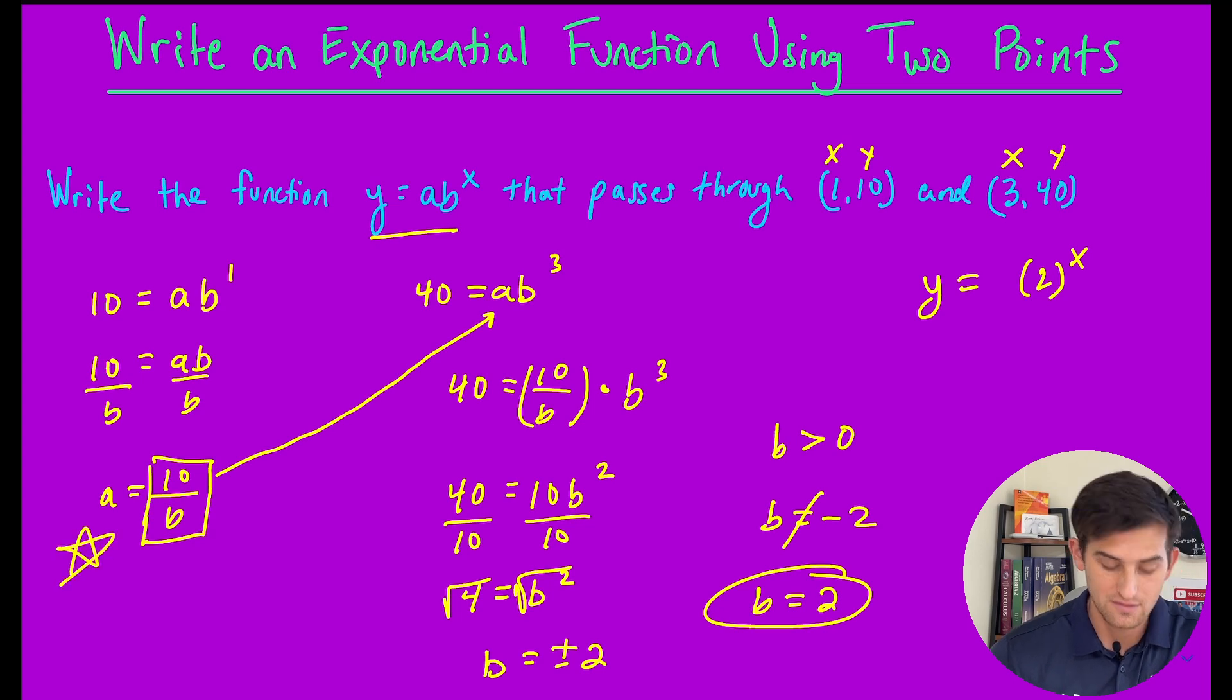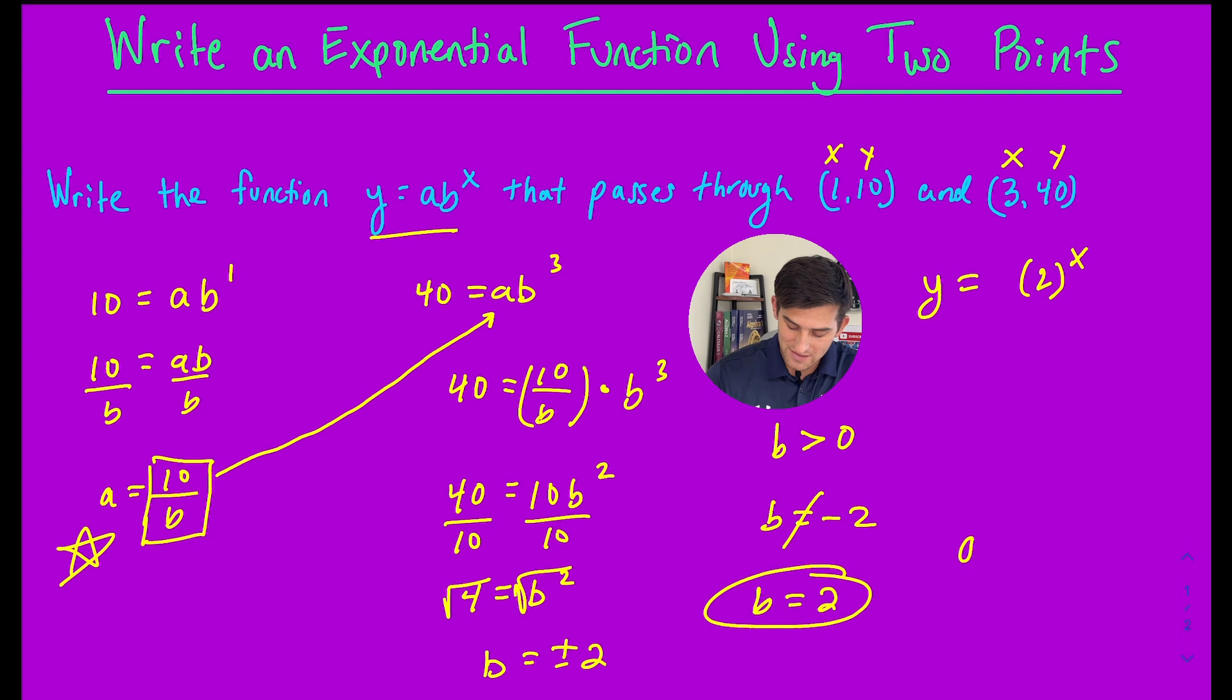Since b is 2, we have a equals 10 divided by 2, so a equals 5.